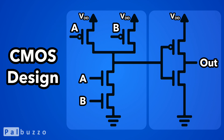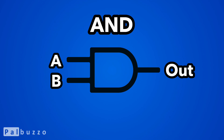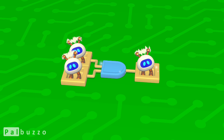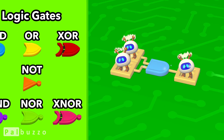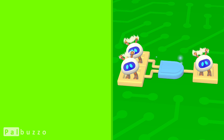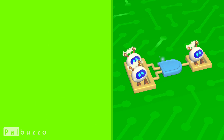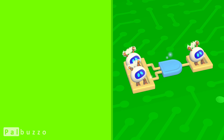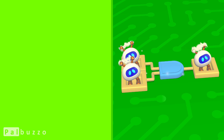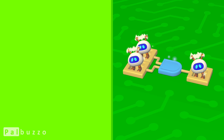Now that we know what goes into an AND gate, we can simplify how we draw it in our designs and just use its symbol. In future videos, we'll see how we can use AND gates with other logic gates to build more complex circuits, which form the foundation of today's computers and digital electronics. We'll see you next time.